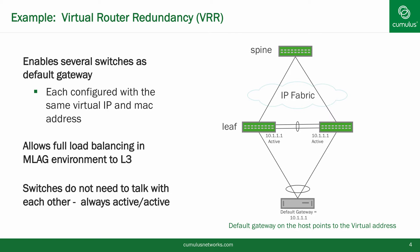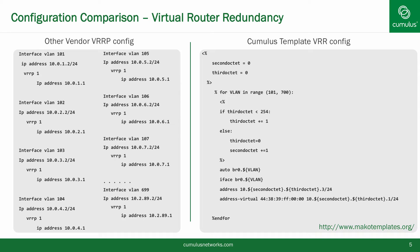In the MLAG environment, the packets will traverse based on MLAG hashing and either gateway that receives the frame will route it. Further, the switches do not need to talk to each other, allowing for much simpler troubleshooting. So let's compare other solutions to how it can be done in Cumulus. For the other solution, I'm using VRRP since no VRR is available. As you can see, there are no ranges configured since IP address configuration is required. This makes the configuration long and tedious and I cannot even fit the entire config on the slide.